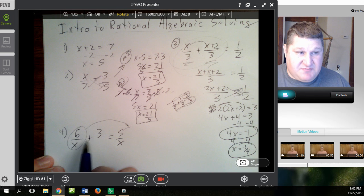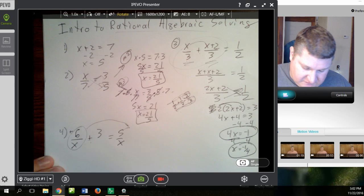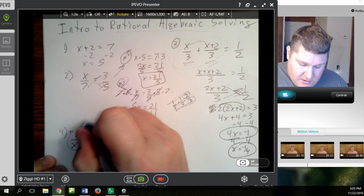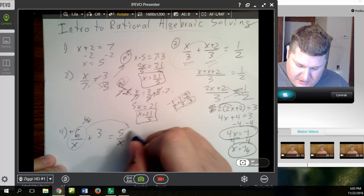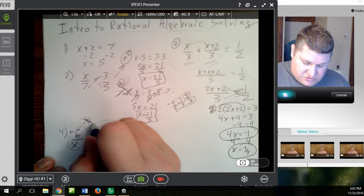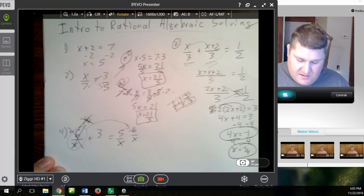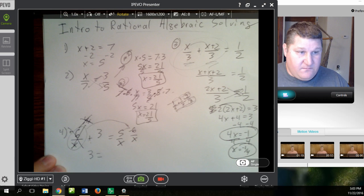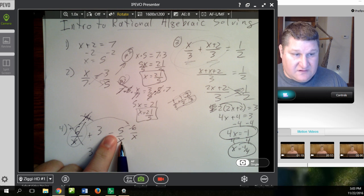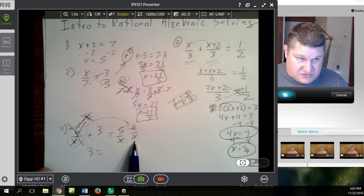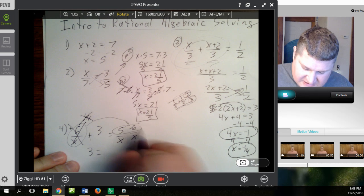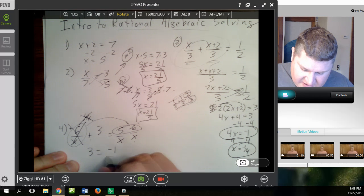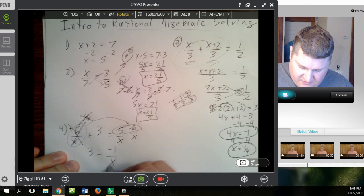Now, since this is attached by plus, and this is positive, the easiest way to move it is minus 6 over x, minus 6 over x. Now, those two are going to cancel out, leaving 3 over here. And the nice thing is, since we have common denominators, all we have to do is take 5 minus 6, negative 1 over a common denominator of x.